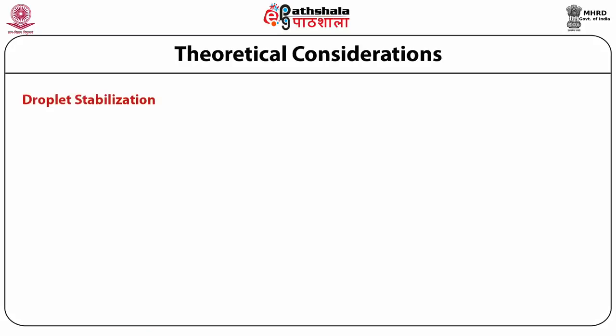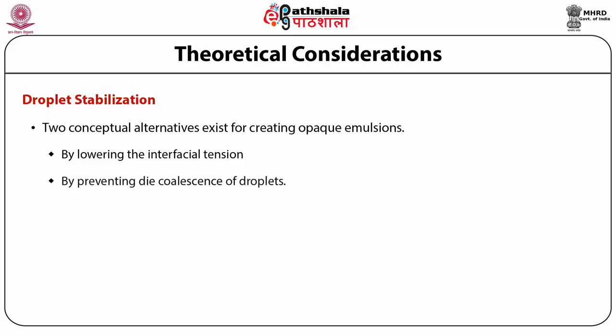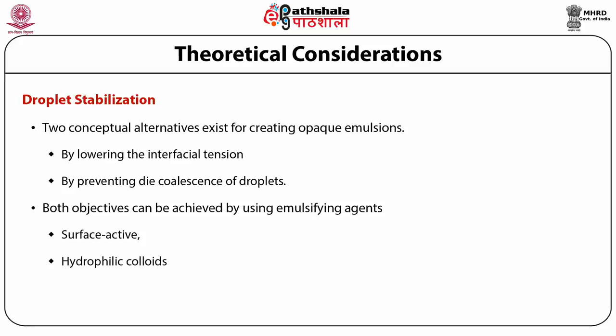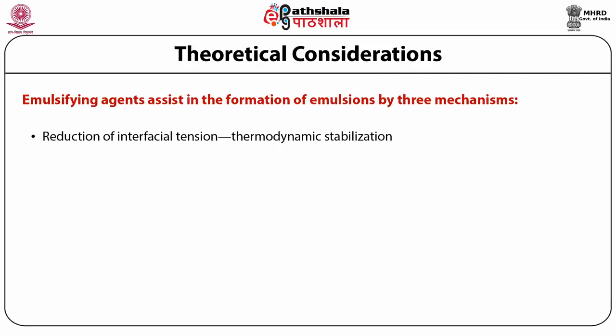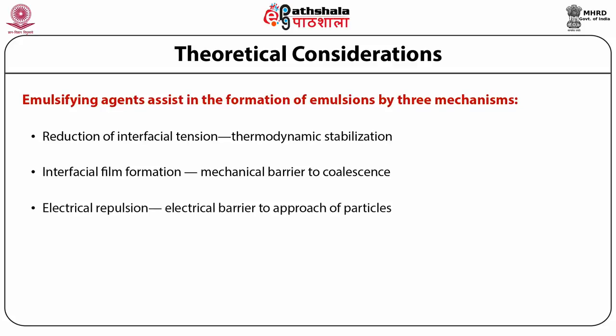We will now discuss droplet stabilization. Two conceptual alternatives exist for creating opaque emulsions: lowering the interfacial tension and preventing the coalescence of droplets. Both objectives can be achieved using emulsifying agents comprising combinations of surface active agents, hydrophilic colloids and finely divided solids. Emulsifying agents assist in forming emulsions by three mechanisms: reduction of interfacial tension (thermodynamic stabilization), interfacial film formation (mechanical barrier to coalescence), and electrical repulsion (electrical barrier to approach of particles).